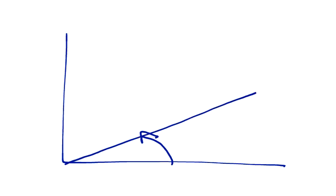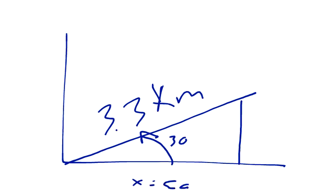What we know is that we have someone who went 30 degrees north of east and she went 3.3 kilometers. Now, this is 30 degrees. How far did she go east? And how far did she go north?